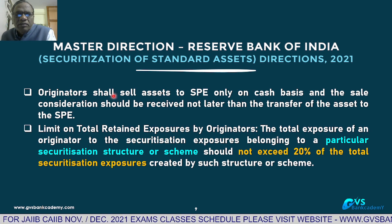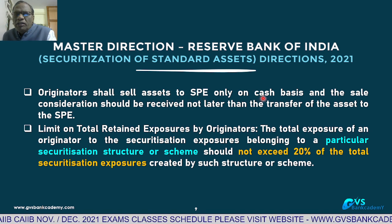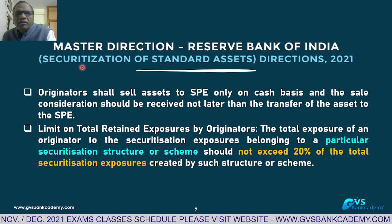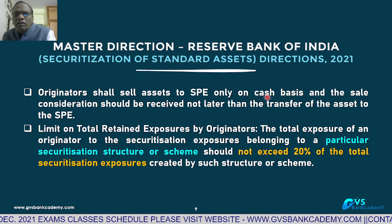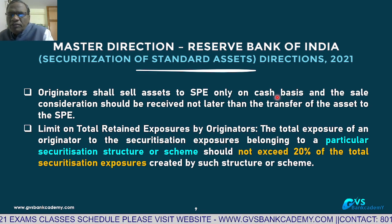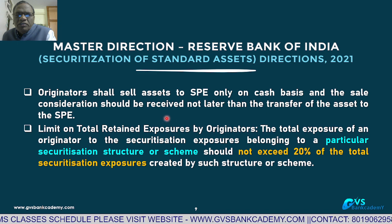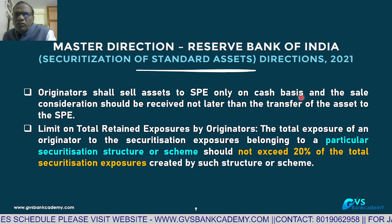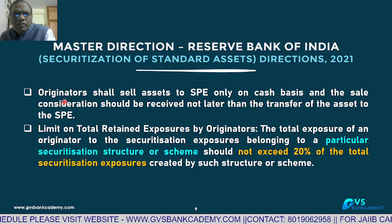Originators (bankers) shall sell assets to a Special Purpose Entity only on a cash basis. Whatever they are transferring or selling must be on cash basis only — no question of any bonds or other instruments. 100% cash. The sale consideration should be received not later than the transfer of the asset — before transferring the asset, the entire sale consideration must be received in cash.